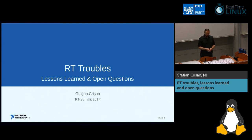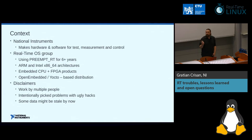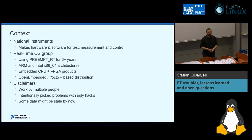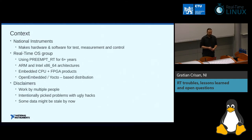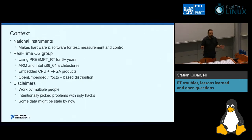I'm Grazian Krishan. I work for National Instruments, which makes hardware and software for the test, measurement, and control markets. I'm part of the real-time OS group. We've been using PREEMPT_RT for the last six or seven years on all new hardware. Our main two architectures are ARM and 64-bit Intel CPUs, and our main platform is an embedded CPU plus FPGA combo. We use OpenEmbedded to build our distro.